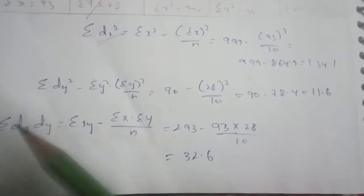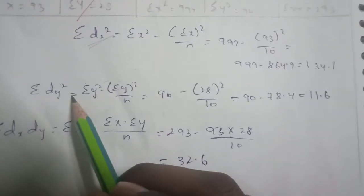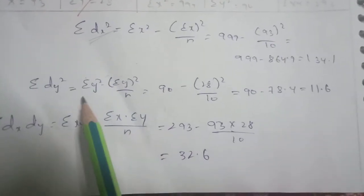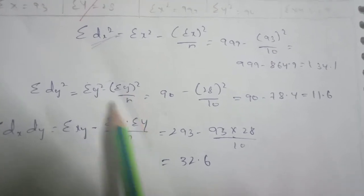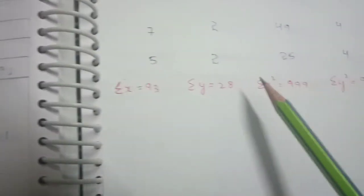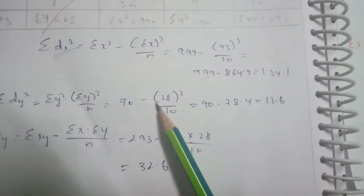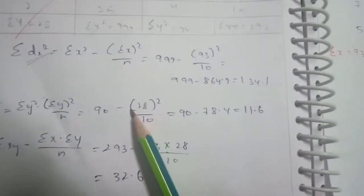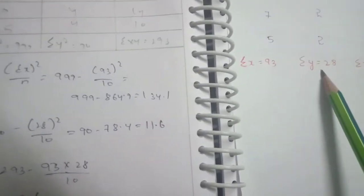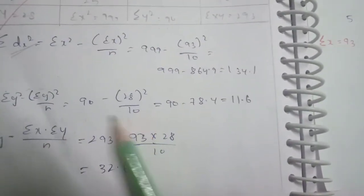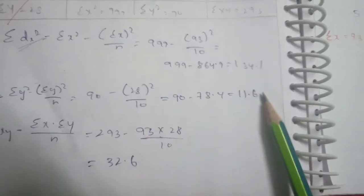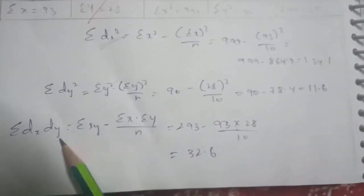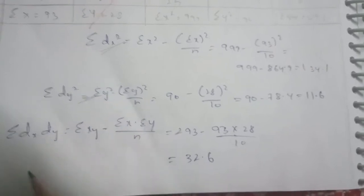Sigma DY squared equals Sigma Y squared minus Sigma Y whole squared divided by N. Sigma Y squared is 90, Sigma Y is 28, N is 10. So: 90 minus 28 squared divided by 10 equals 11.6.